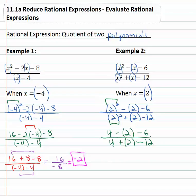This time there's no multiplying so we can just do all the adding and subtracting across. 4 minus 2 is 2, 2 minus 6 is negative 4 over 4 plus 2 is 6, 6 minus 12 is negative 6.